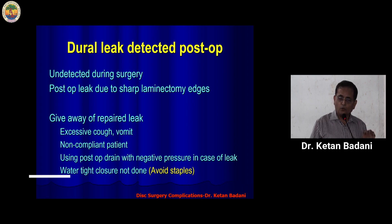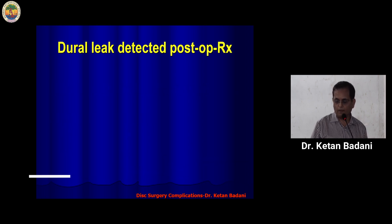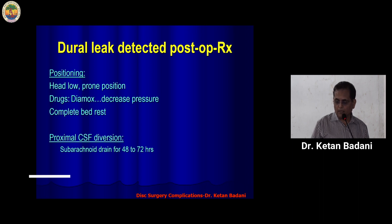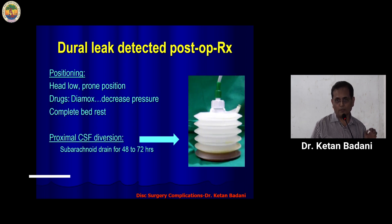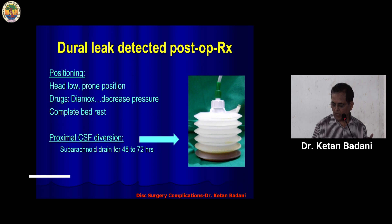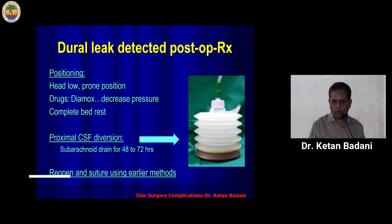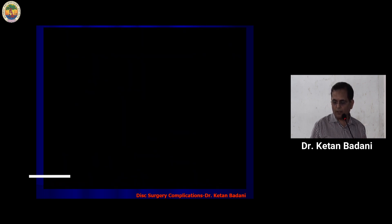One important measure is not to use staples — use watertight closure with proper stitch material instead of staples. For a post-operative leak, use of a proximal subarachnoid drain is one described method, where you put a subarachnoid drain and drain CSF into a container. It is important to have a needle to let air out, because in a closed system with very low CSF pressure, the CSF may not drain and the device might fail. If that also fails, you have to reopen and suture using earlier methods.